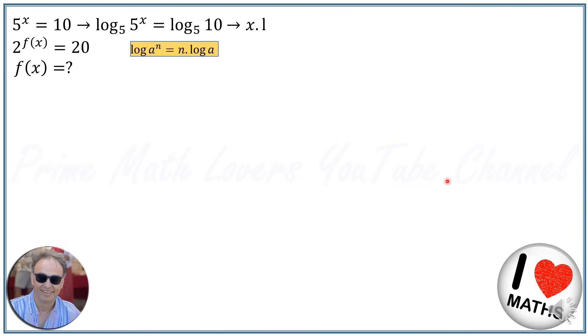So x can hop right out in front and we get x·log₅(5) = log₅(2×5). I replace 10 by 2 times 5. Here we use two more log rules.